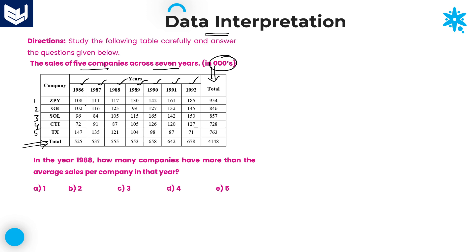Now, if you look at the values, here the total values are given. If the question paper wants to give it in the simplest manner, he will give the total value; otherwise he will not mention the horizontal and vertical totals and we need to calculate manually. Sometimes he will mention in the table, sometimes he will not, so we must be in a position to calculate all the values as well.